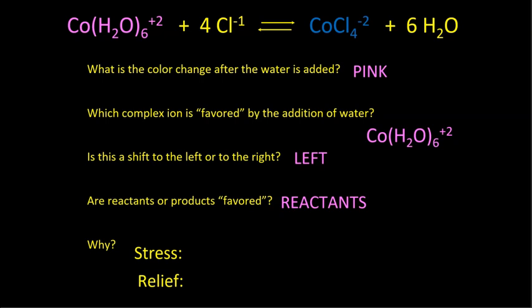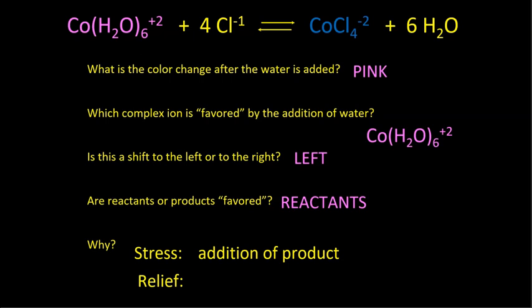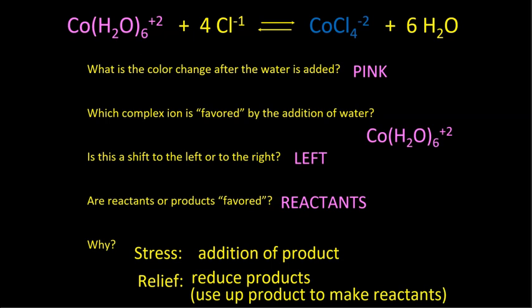The stress was addition of a product. Le Chatelier's principle says the equilibrium will try to reduce the effect of the stress, so the relief is to reduce products. The system uses up product and ends up making reactants. Adding more water increases the chance of collisions on the product side, which shifts the reaction to the left, producing more of the things on the left — more reactants.